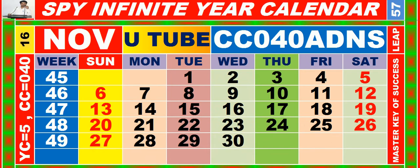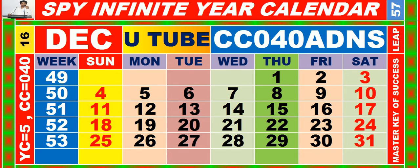Calendar for the month of November having calendar code equal to 0 for 0. Calendar for the month of December having calendar code equal to 0 for 0.